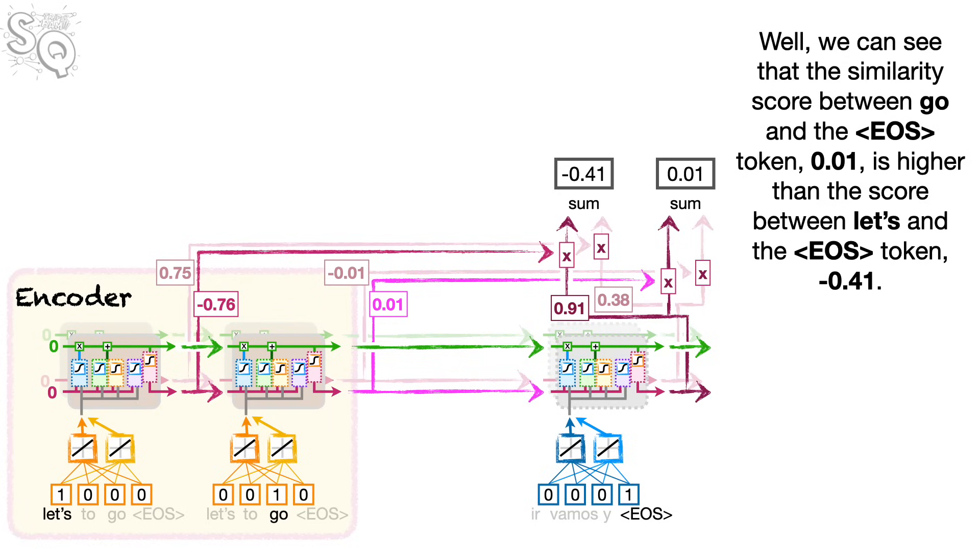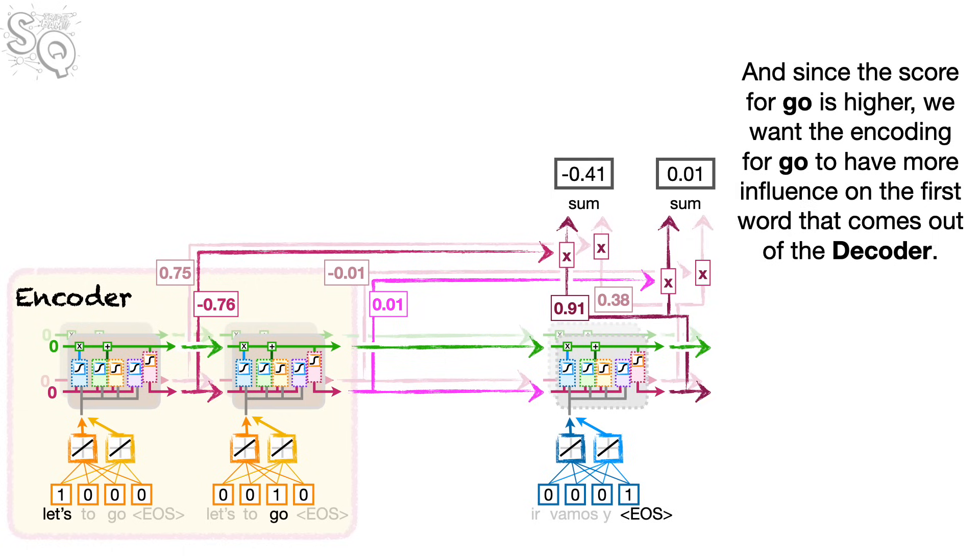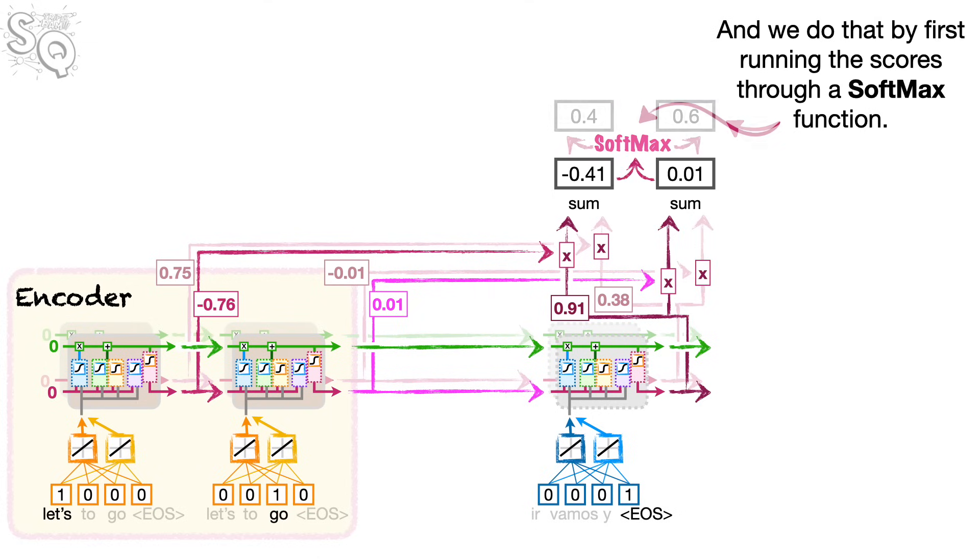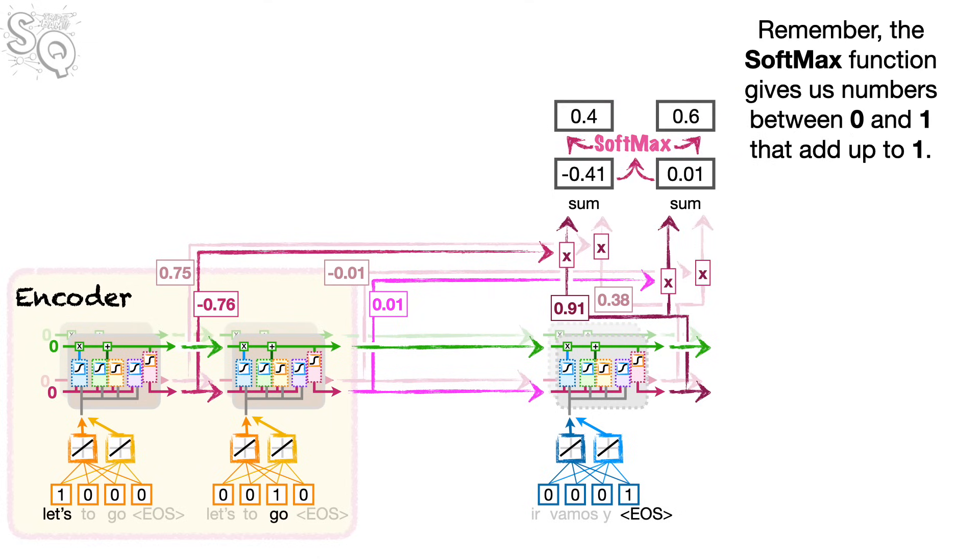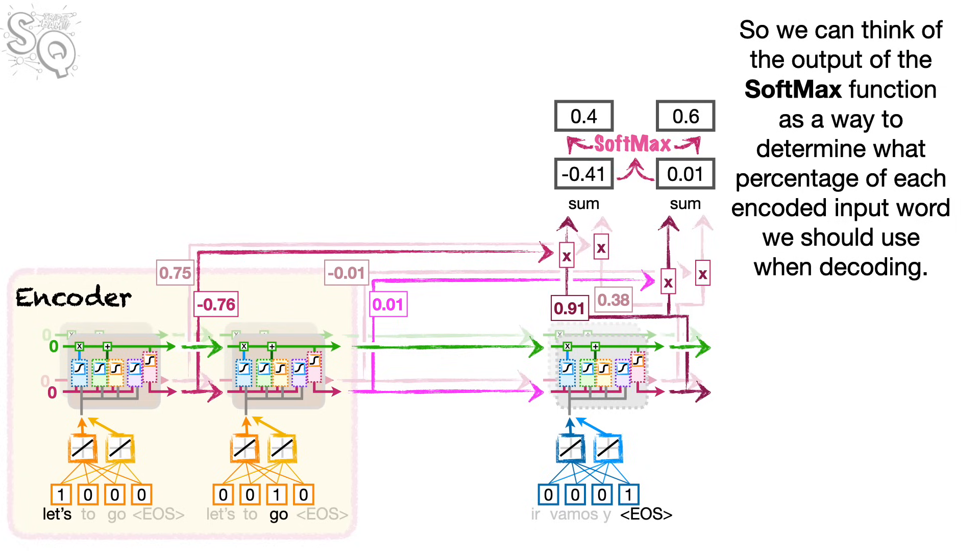Well, we can see that the similarity score between GO and the EOS token, 0.01, is higher than the score between LETS and the EOS token, negative 0.41. And since the score for GO is higher, we want the encoding for GO to have more influence on the first word that comes out of the decoder. And we do that by first running the scores through a softmax function.